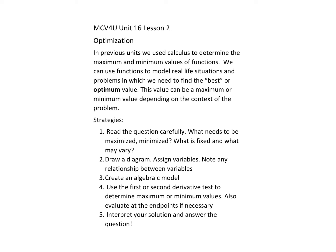In this lesson we're going to look at optimization. The optimal value is what we would consider the best value — usually a maximum or a minimum depending on the context of the problem. A few strategies: make sure you read the question carefully, determine which quantity needs to be maximized or minimized, then look at what is fixed and what might vary. A diagram is always helpful; assign variables to measurements and note any relationships between the variables.